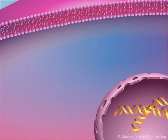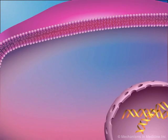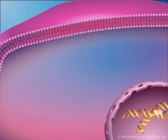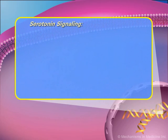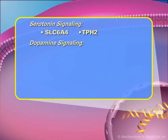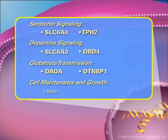Variations of several genes have been identified as potential contributors to the pathophysiology of bipolar disorder. Among the identified genes are those associated with serotonin signaling — SLC6A4, TPH2; dopamine signaling — SLC6A3, DRD4; glutamate transmission — DAOA, DTN, BP1; and cell maintenance and growth — NRG1, BDNF, DISC1.